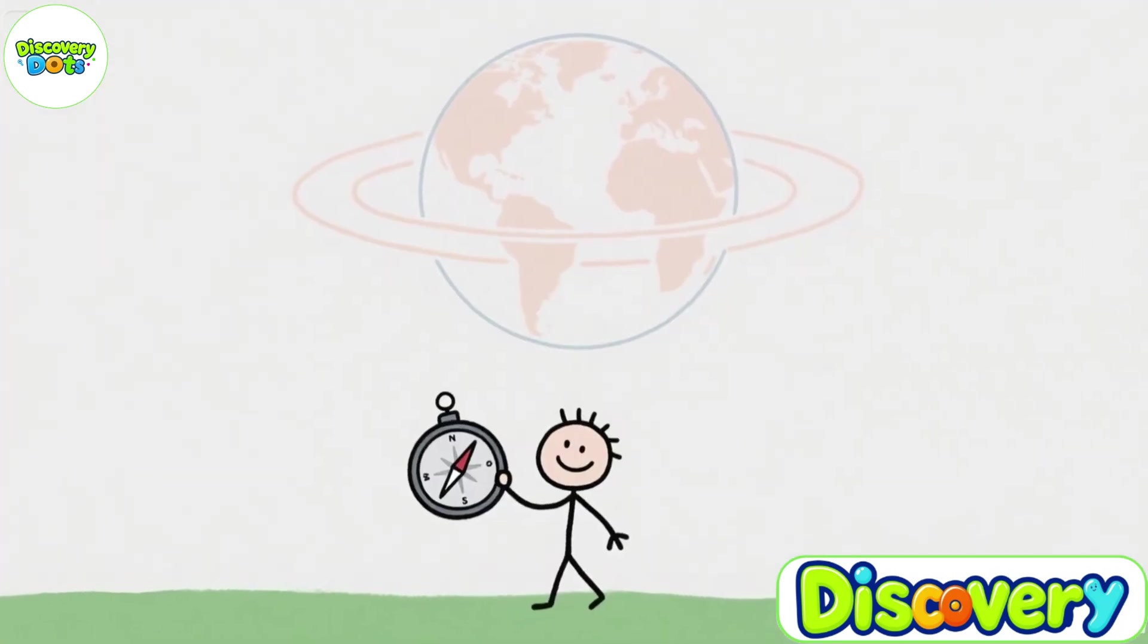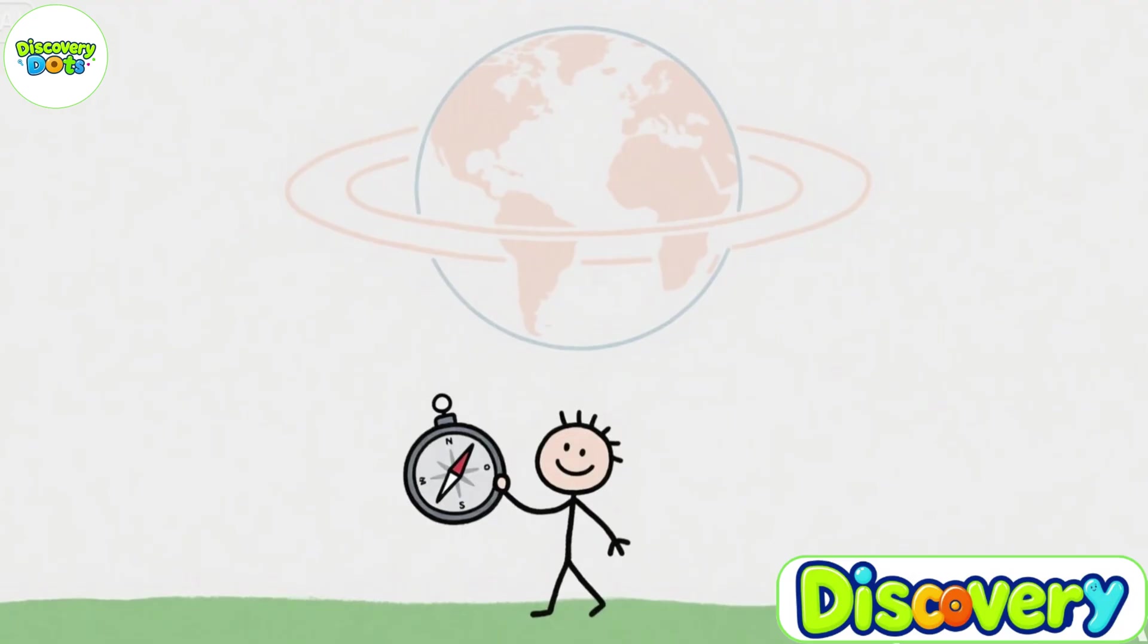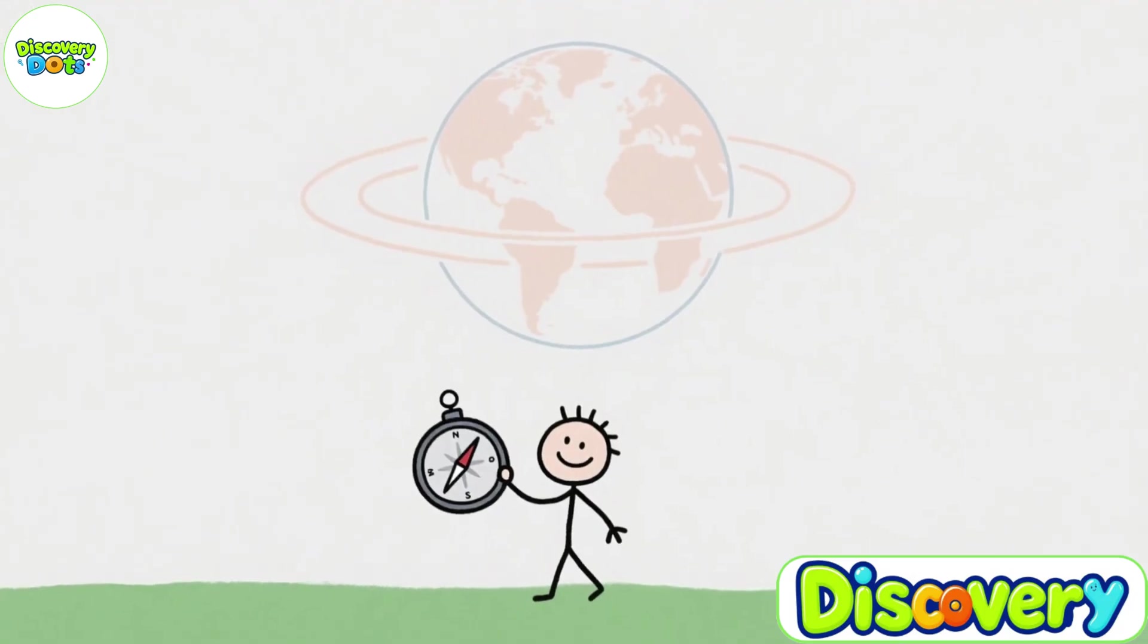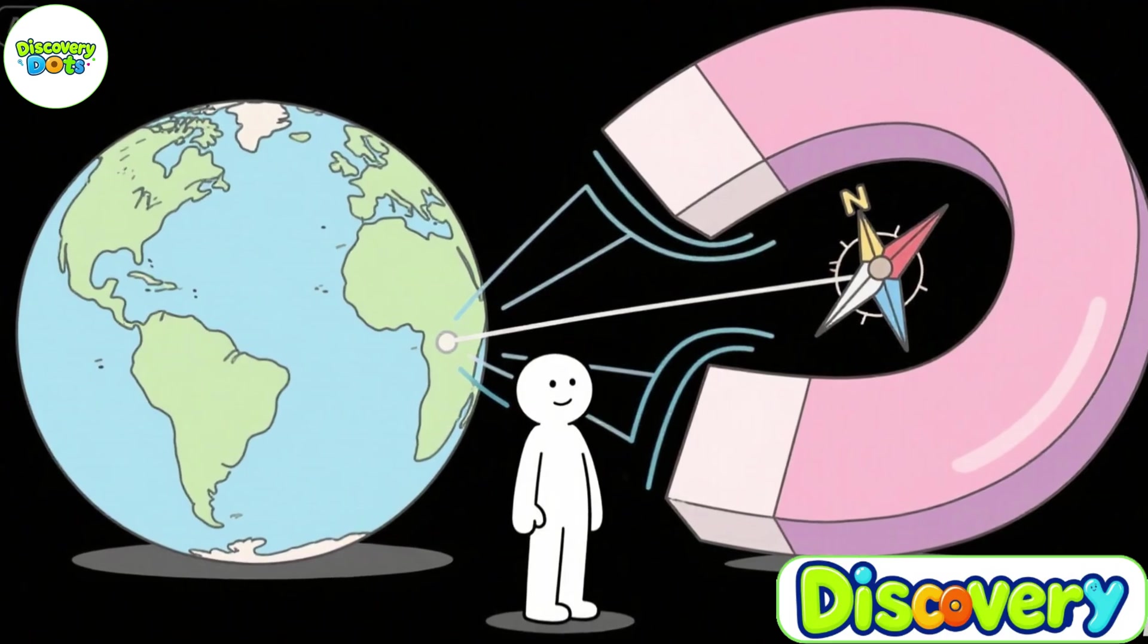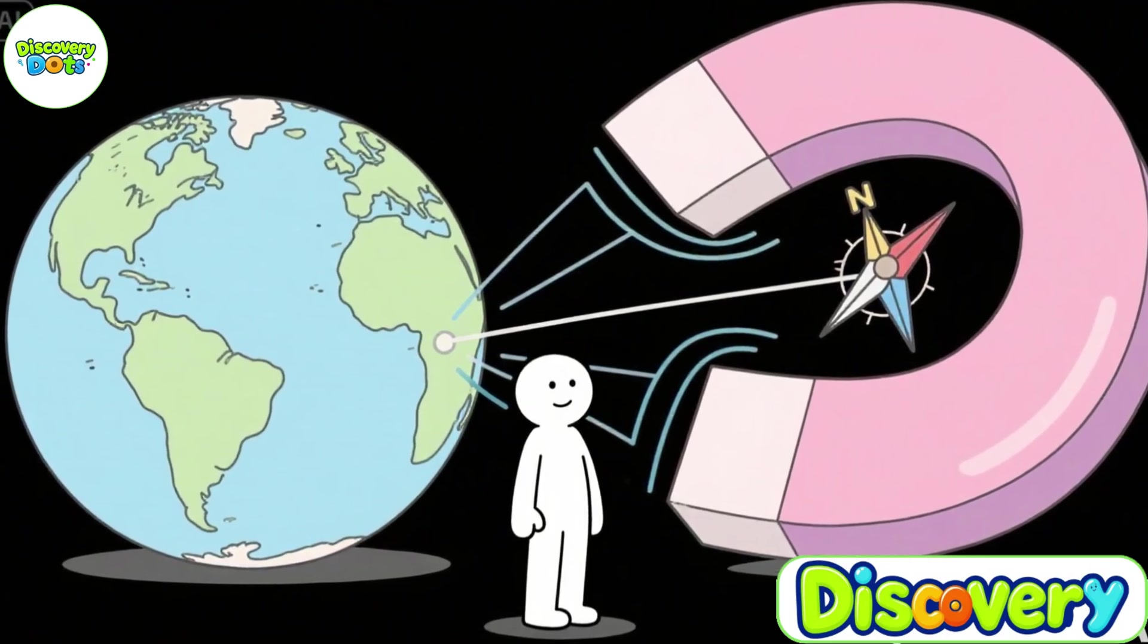So now we have the answer. The compass needle always points north because it is drawn by Earth's immense magnetic field. Earth functions as a natural magnet, and the compass simply follows the laws of physics.